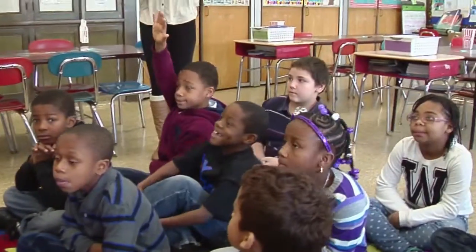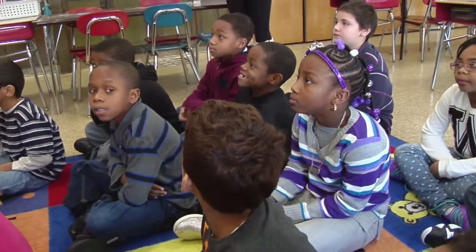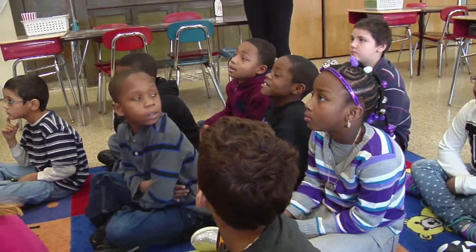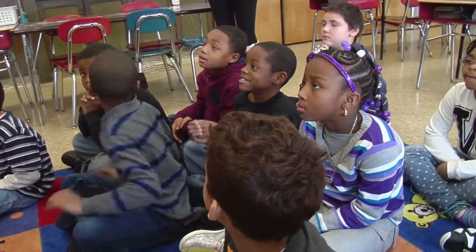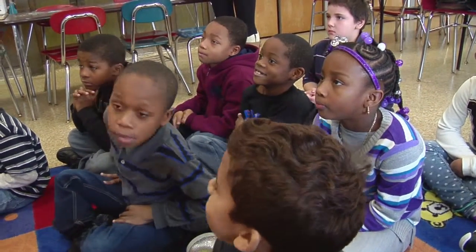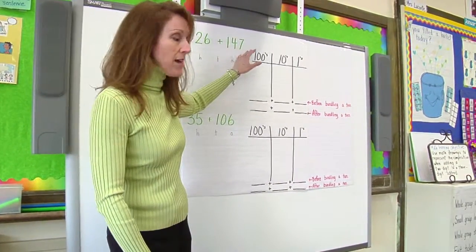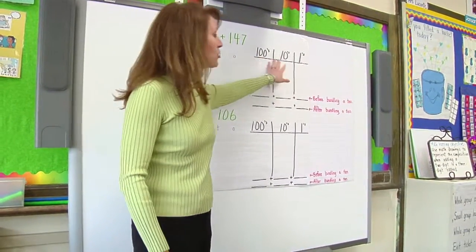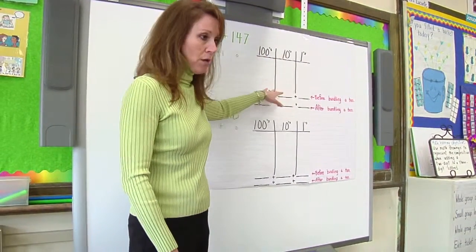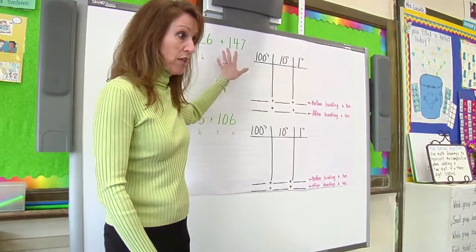It means adding double digits and triple digits. Good. Double digits and triple digits. And if you notice up here today, we're going to practice adding two-digit and three-digit addends, and we're going to be drawing our chip model to represent the written addition.